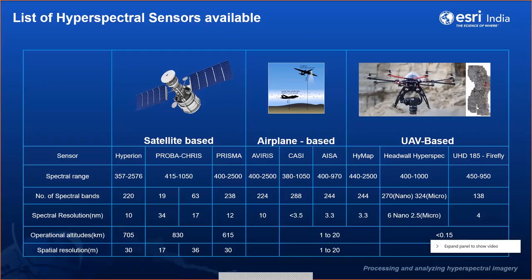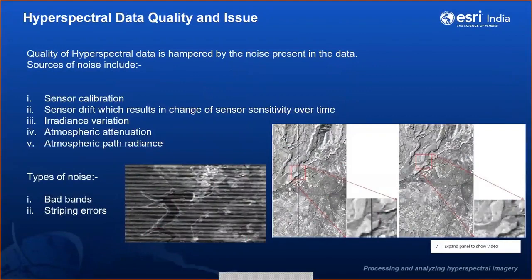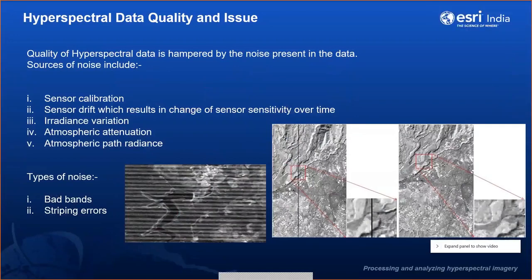Professionals working with drone and UAV datasets use sensors like HyperMax or HeadWall. Airborne and aircraft data users work with AVIRIS datasets. These sensors cover a wide number of wavelengths in nanometer ranges, which can contain a lot of noise. Data quality is hampered by this noise — including sensor calibration issues, sensor drift, irradiation variation related to solar energy, aerosols, water vapor, atmospheric attenuation, scattering, absorption, and atmospheric path radiance.